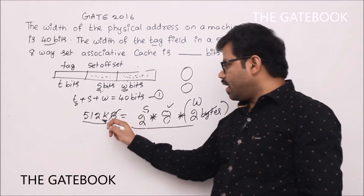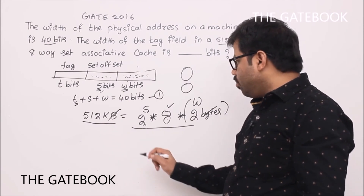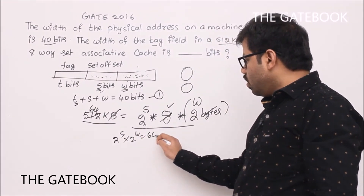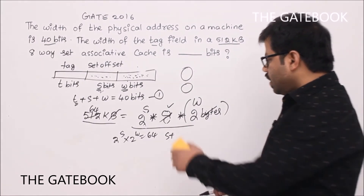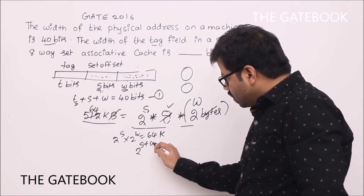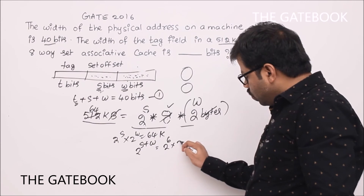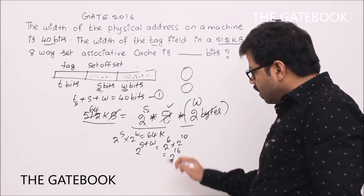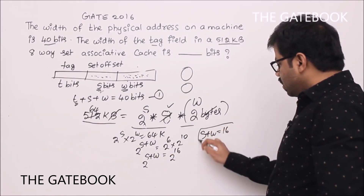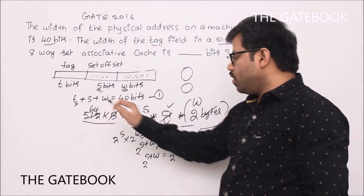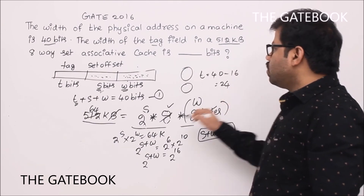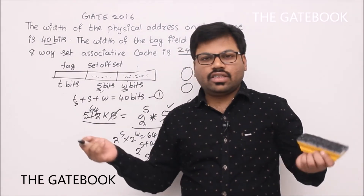Simplifying: 8 × 2^s × 2^w = 512 K. Since 8 = 2^3, we get 2^(s+w) = 64K = 2^6 × 2^10 = 2^16, so s + w = 16. Substituting back: t = 40 − (s + w) = 40 − 16 = 24 bits. The answer is 24 tag bits.